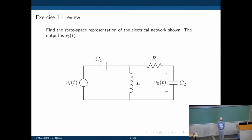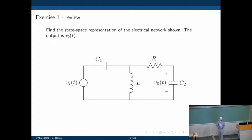We want to find the state space representation for this circuit. The output here is V0, chosen to be the voltage across capacitor C2 — it could have been anything else — and the input is Vi, a voltage applied to the first branch.